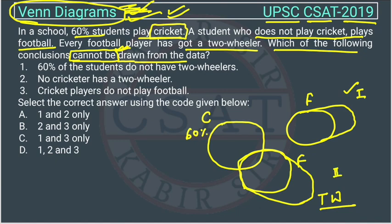Now, 60% of students do not have a two-wheeler. Football players make up 40% because 60% are playing cricket, so the remaining 40% are playing football. We know this, but we do not know whether cricket players also have two-wheelers.